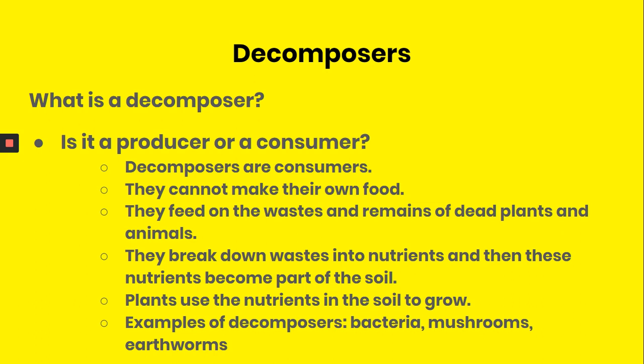Plants grow in the soil and use the nutrients to help them grow. Then, as the plants die, they decay and become food for the decomposers again, and the cycle continues over and over again. Some examples of decomposers are bacteria, mushrooms, and earthworms.